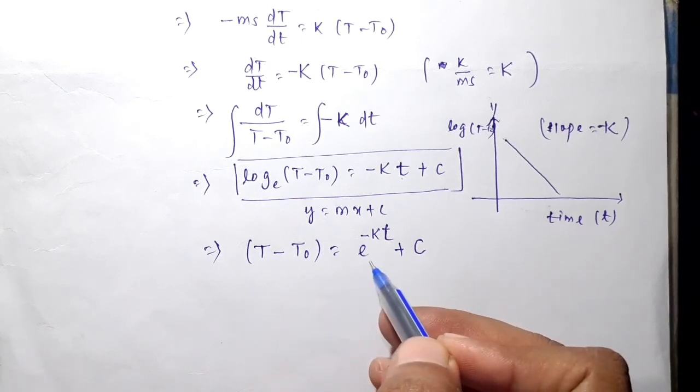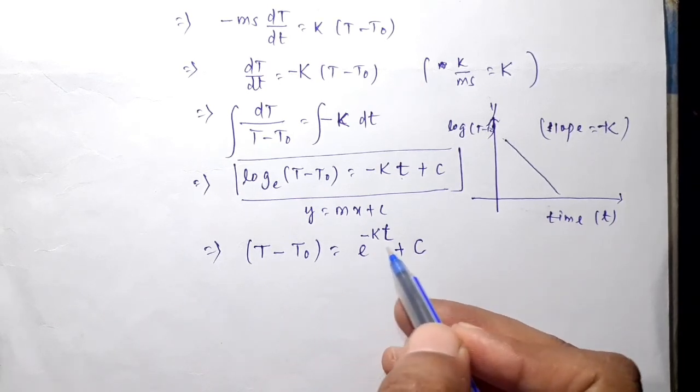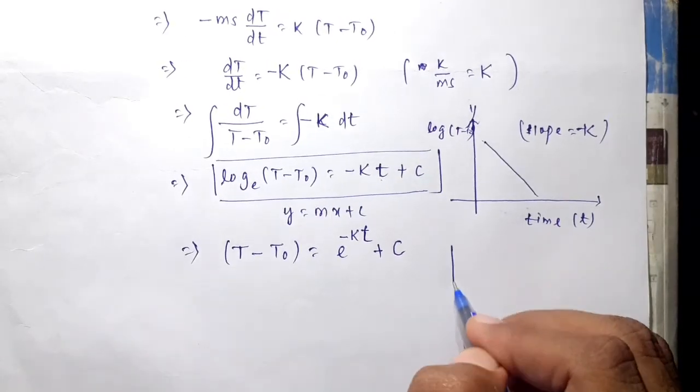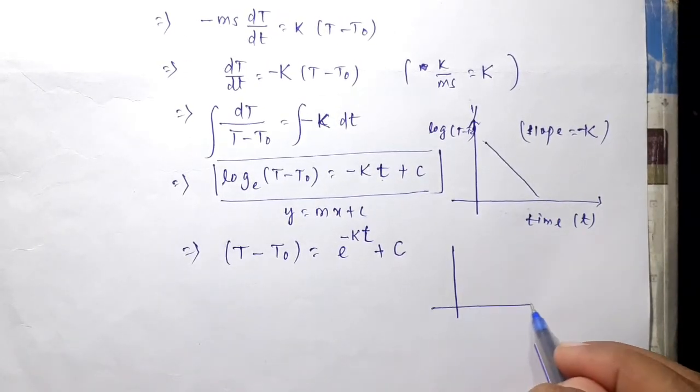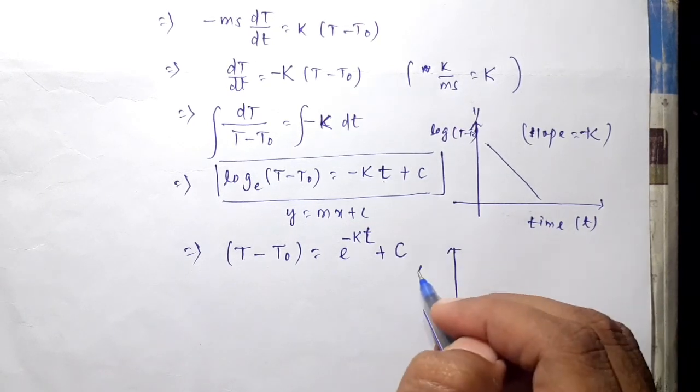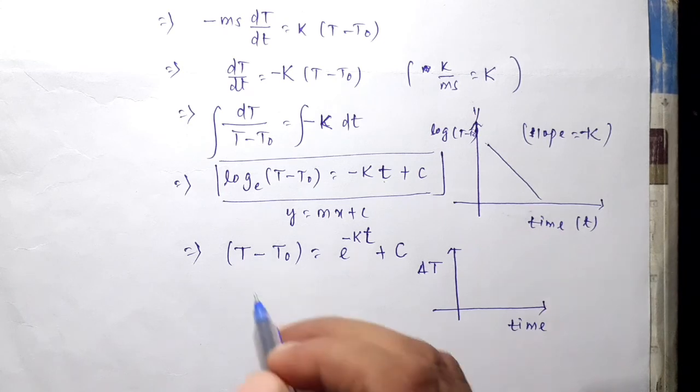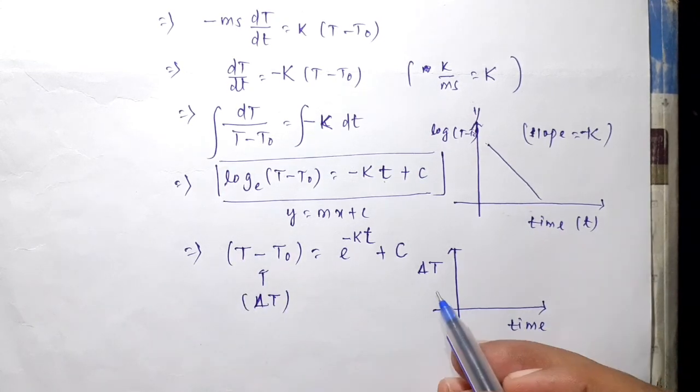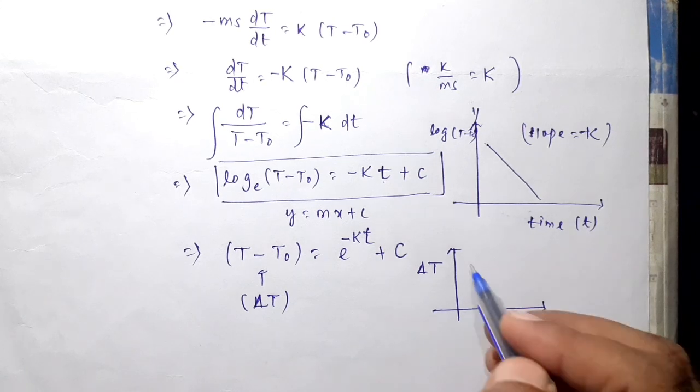Because of this exponential nature, when we draw the graph with time versus delta T (where delta T means T minus T0), the graph will look parabolic or exponential, like this.